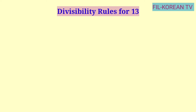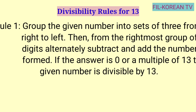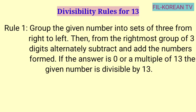There are 4 rules we can use to test whether a number is divisible by 13. First rule: group the given number into sets of 3 from right to left. Then, from the rightmost group of 3 digits, alternately subtract and add the numbers formed. If the answer is 0 or a multiple of 13, the given number is divisible by 13.